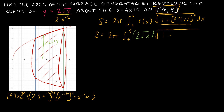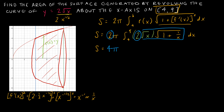So inside the integral I have √(1 + 1/x) dx. I can combine the 2 from r(x) and the 2π to get 4π on the outside. Multiplying through inside the square root by x gives √((x + 1)/x · x) = √(x + 1). That simplifies quite nicely.